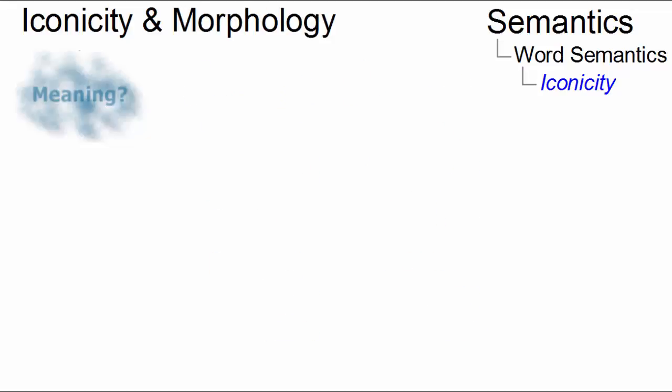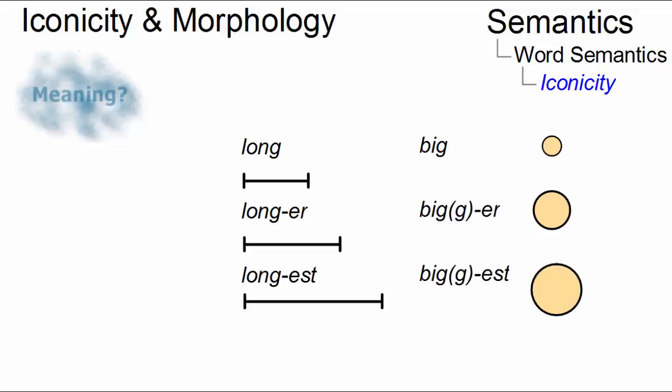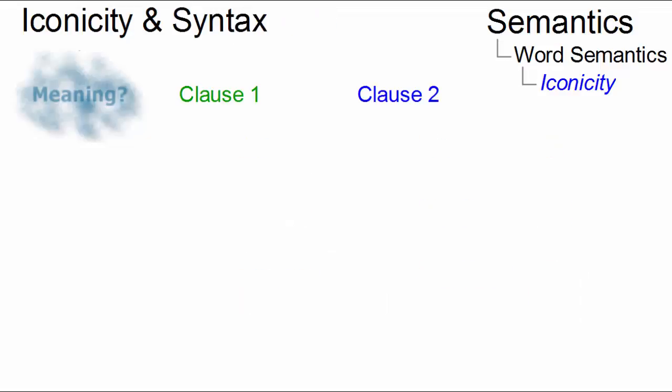In morphology, examples from degree adjectives often show that the most extreme degree of their meaning is iconically represented by the word with the greatest number of phonemes.